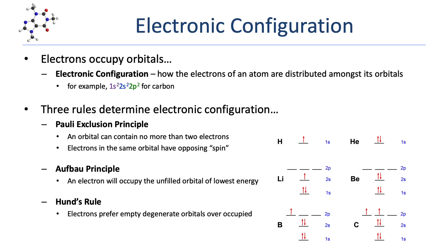Now that we know about orbital energies, we can talk about how orbitals are populated with electrons — we call that electronic configuration. An electronic configuration is a description of how the electrons in an atom are distributed amongst its orbitals. One way to describe it is a string like 1s2, 2s2, 2p2 for a carbon atom, meaning two electrons in the 1S orbital, two in the 2S orbital, and two electrons in the 2P orbitals. This is useful but a little ambiguous, since there are three 2P orbitals and we can't tell if those electrons are in the same or different orbitals.